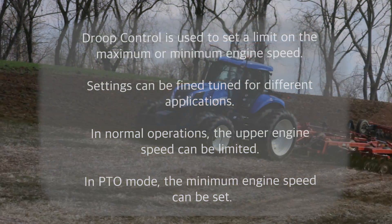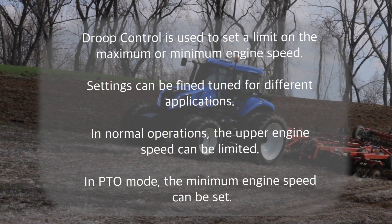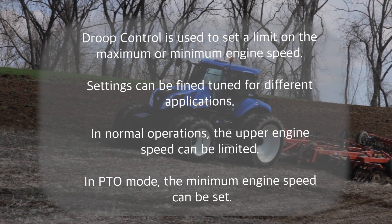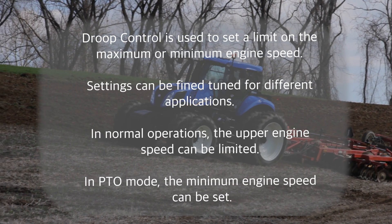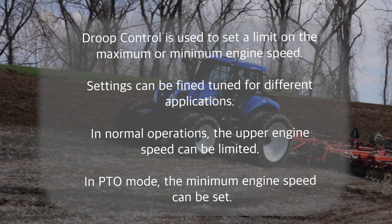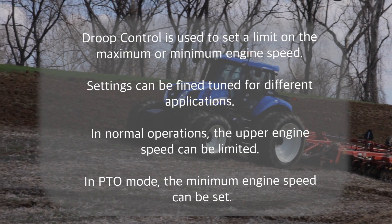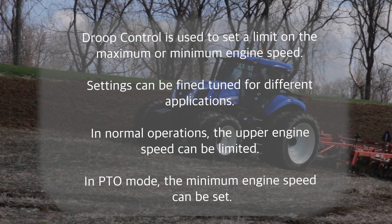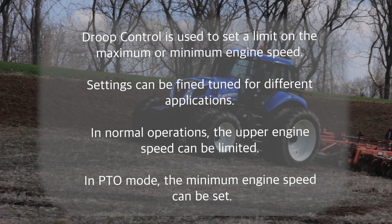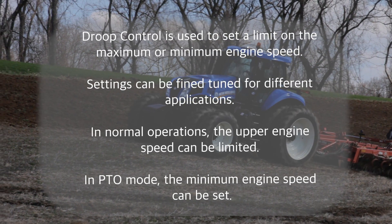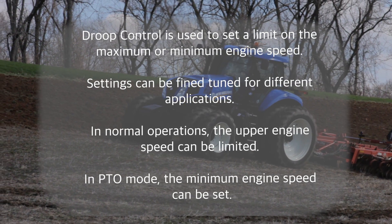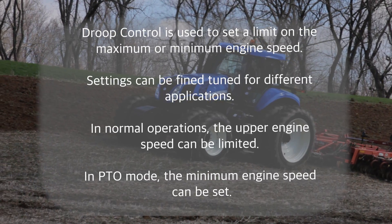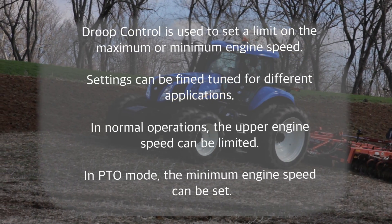Droop control is simply used to set a limit on the maximum or the minimum engine speed. Settings can be fine-tuned for different applications. In normal operating conditions, the upper engine speed limit can be limited. In PTO mode, the minimum engine speed can be set.